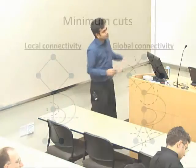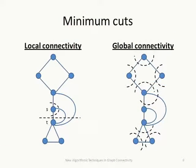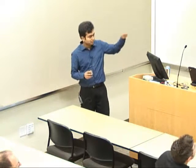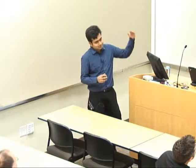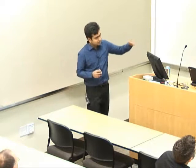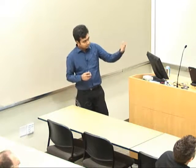Let's start with minimum cuts. There are two kinds: local connectivity problems, where we find the smallest cut separating two given terminals s and t, and global connectivity problems, where we find the smallest cut in the entire network without specified terminals. Both represent the fragility of the network to failures.